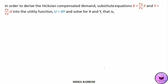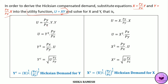To derive the Hicksian compensated demand functions, these expressions must be substituted into the utility function u equals xy. Substituting in the place of x we get u equals Py divided by Px times y, times y, which is y squared times Py by Px. Taking y squared to the LHS we get y squared equals Px by Py times u. Bringing the square to the RHS we get y equals the square root of u times Px by Py. This can also be written as y equals u raised to 0.5 times Px by Py raised to 0.5. This is the Hicksian demand for good y.